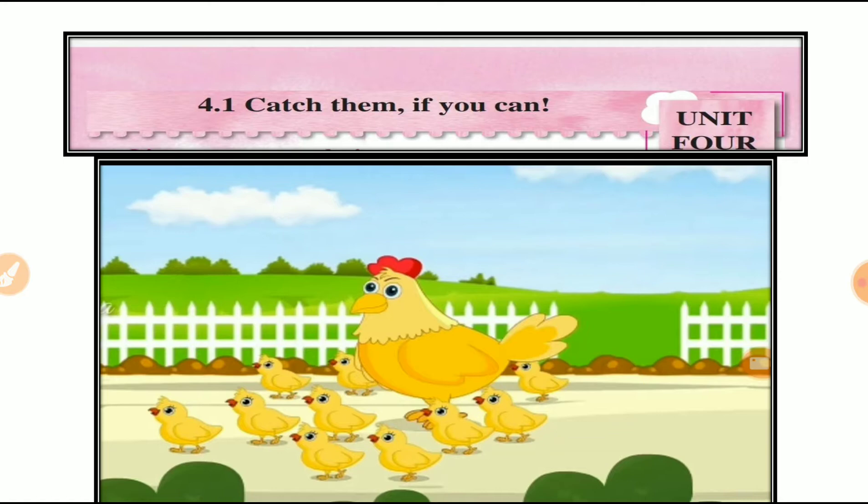Jho hen ke bachay hootay hain, unko boletay hain chicks. Or jyadha rheengye to kya bolengye? Chicken. One rheega to chick. More rheengye to chicken. To ye kya hai? Kaha hai ye? Farm yard me hai. Kaha hai? Farm yard. Means, kheed ke udar side me hai. Okay?